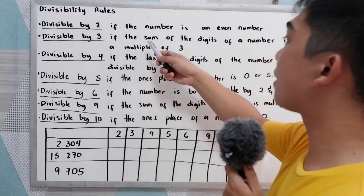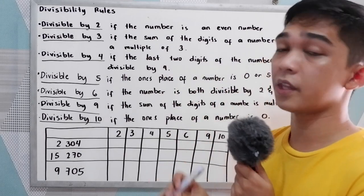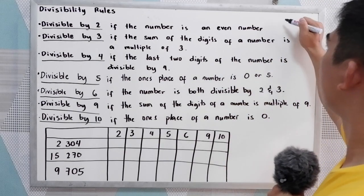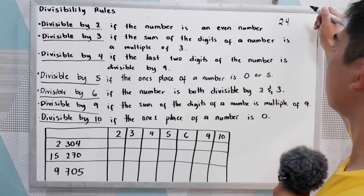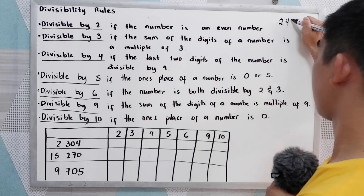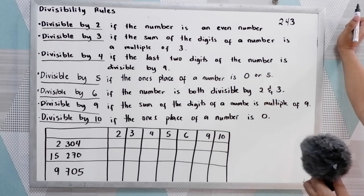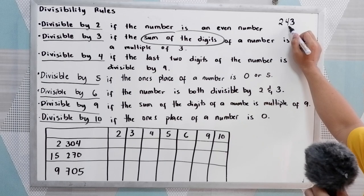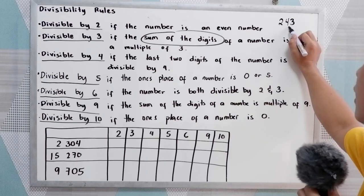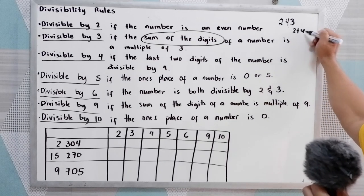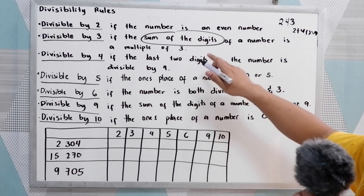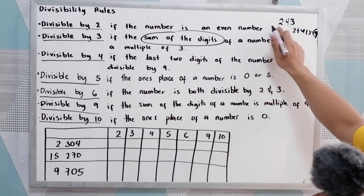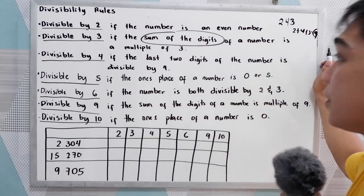Divisible by 3: if the sum of the digits of a number is a multiple of 3. For example, let's say we have 243. We get the sum of the digits: 2 plus 4 plus 3, that is 9. Since 9 is a multiple of 3, that means 243 is divisible by 3.